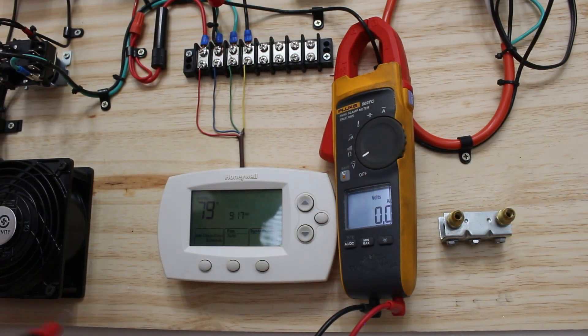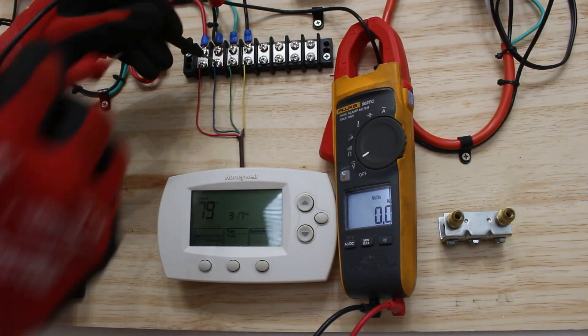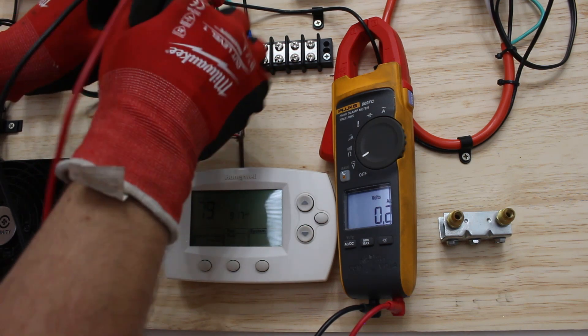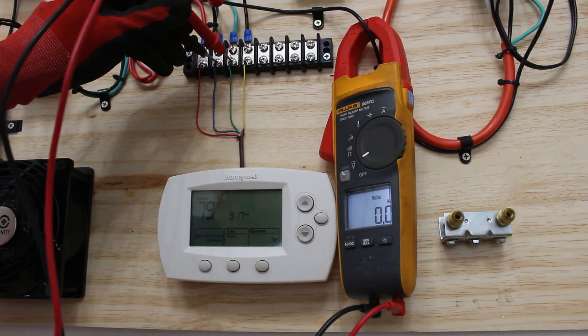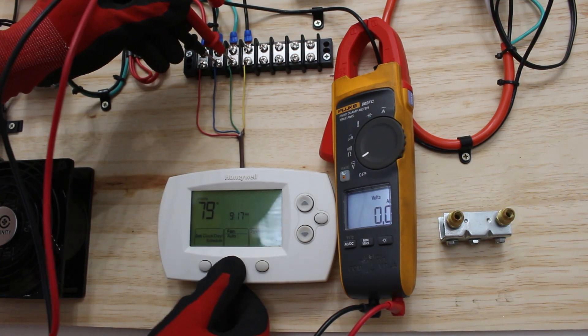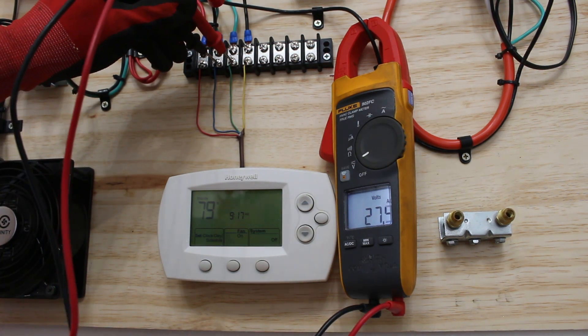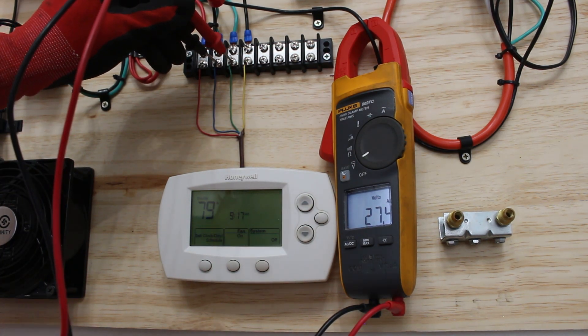Let's start with G, our fan. So we're going to go from common to G, C to G. System is off, we have zero volts, and if we put it on, now we have 28 volts, now power sending through.